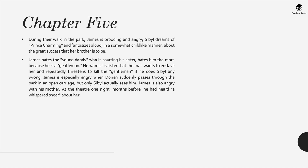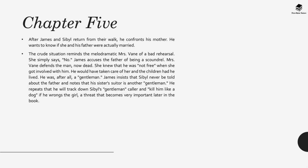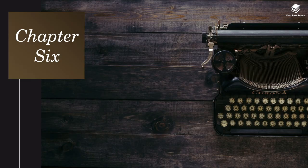James is especially angry when Dorian passes through the park in an open carriage—but only Sybil actually sees him. James is also angry with his mother, having heard a whispered snare about her at the theatre one night months before. After James and Sybil return from the walk, James confronts his mother, wanting to know whether she and his father were actually married. In a very melodramatic scene, Mrs Vane essentially tells him they didn't marry. James accuses their father of being a scoundrel, but his mother defends the man—she knew he wasn't free when she got involved with him: 'He was a gentleman.' James uses this to insist that Sybil should not be with her gentleman suitor, and continues to repeat that he will track down this gentleman caller and kill him like a dog if he wrongs Sybil.